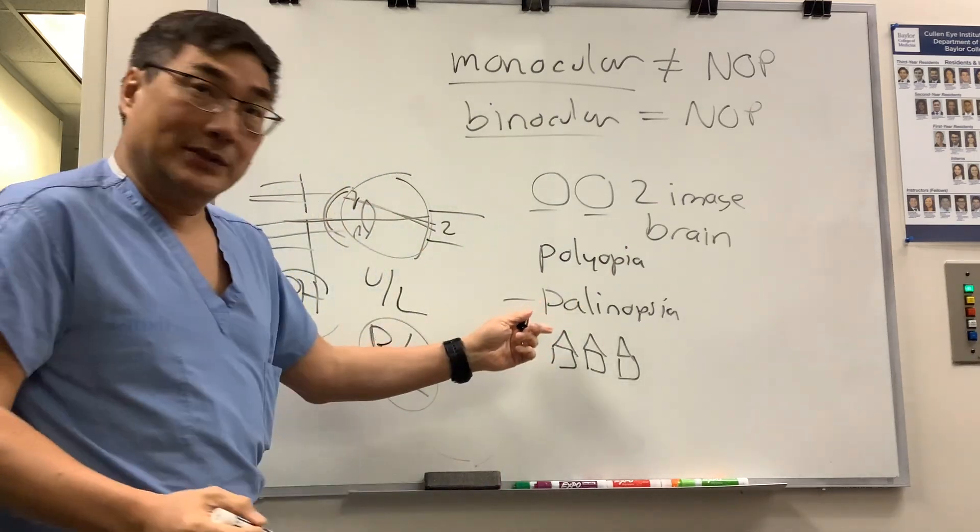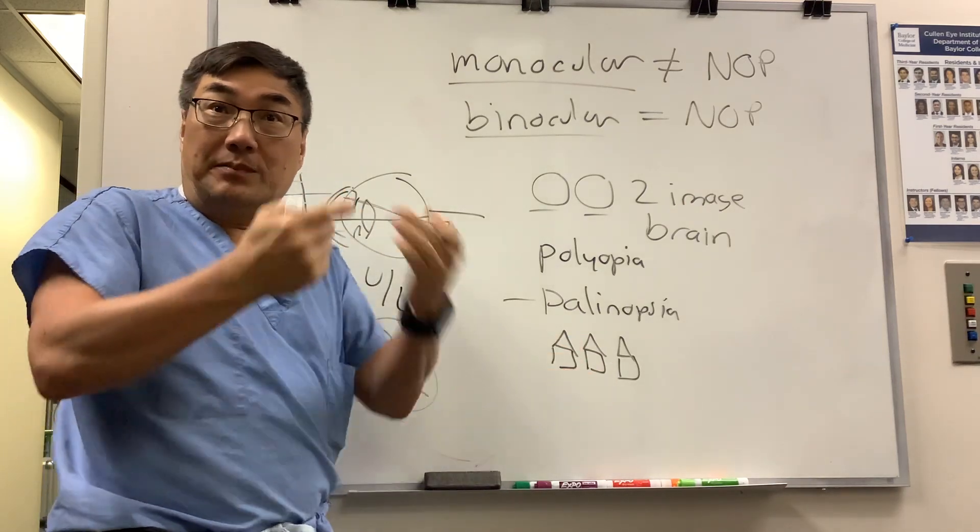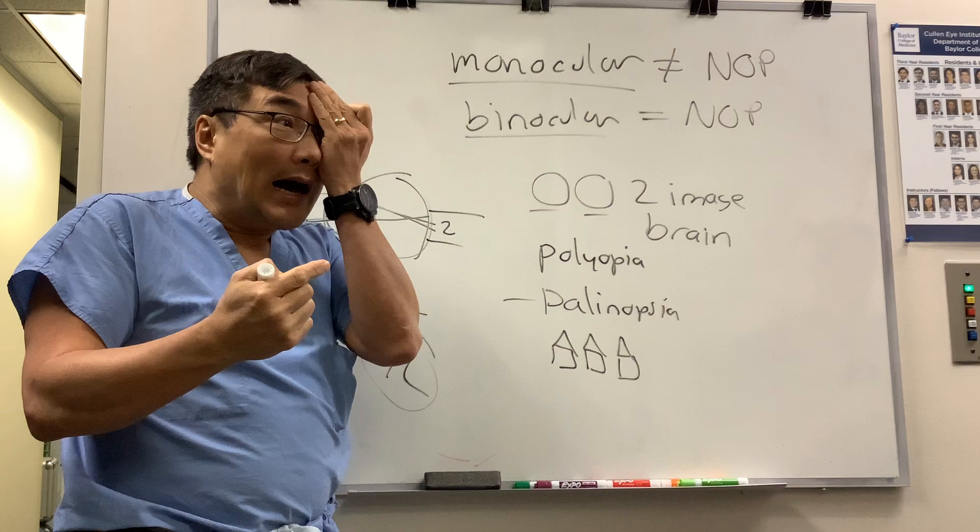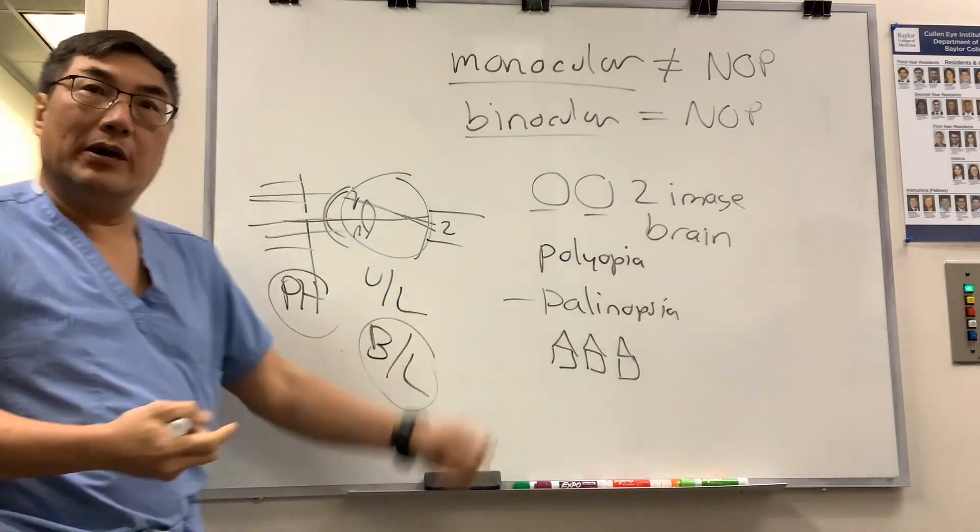Palynopsia will be bilateral. They'll see the double image or triple image in both eyes. If you cover one eye, it'll still be there. If you cover the other eye, it'll still be there. If you put the pinhole up, it won't go away.